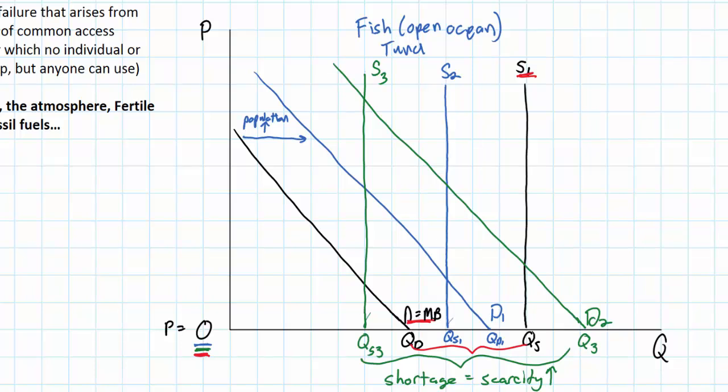But as demand grew to D1 and supply decreased to S2, what should have happened was the price of tuna should have started to rise. There should have been an increasing cost of extracting tuna to the fishermen who are actually catching the fish. But what happens instead is that if the price remains at zero, we end up with the shortage of tuna that I illustrated previously.